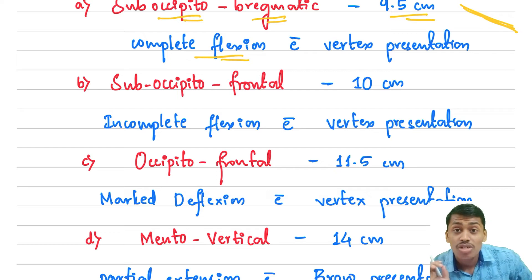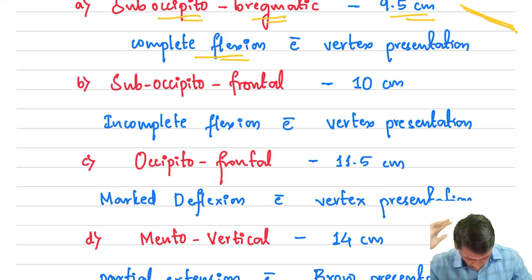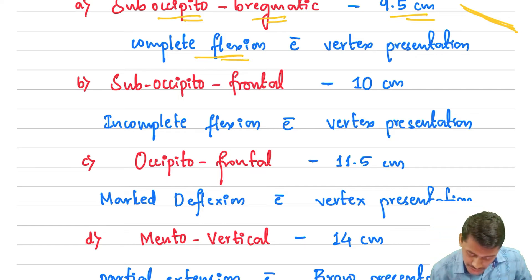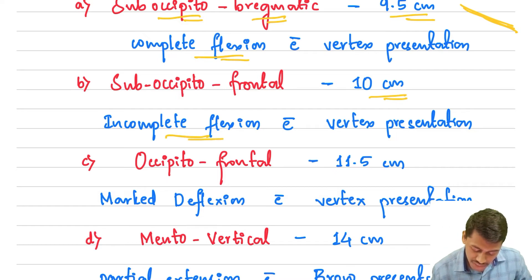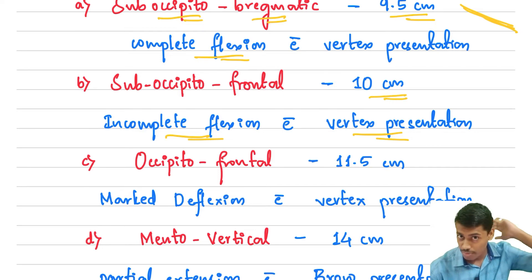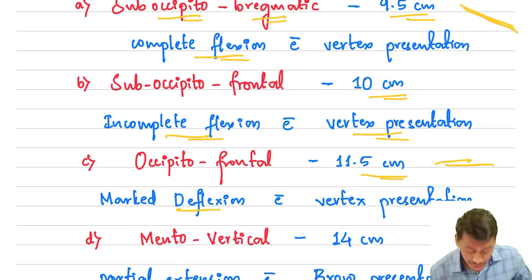The next diameter is the suboccipitofrontal diameter. This occurs when there is a little bit of deflection from full flexion — from suboccipito all the way up to the frontal. The suboccipitofrontal diameter measures up to 10 centimeters and occurs with incomplete flexion and vertex presentation. Then we have the occipitofrontal diameter — from the occipital all the way up to the frontal — measuring up to 11.5 centimeters, with marked deflection and vertex presentation.